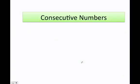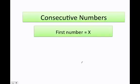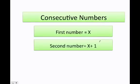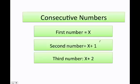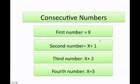How do we do these problems? The first thing you need to learn is how to set up consecutive numbers. Anytime you have the first number, that's going to be x. The second number is x plus 1, the third is x plus 2, and the fourth is x plus 3. This makes sense: if the first number is 1, the second has to be 1 plus 1, which is 2; the third is 1 plus 2, which is 3; and the fourth is 1 plus 3, which is 4.